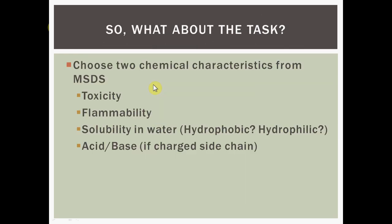With your task, what you need to do is choose two chemical characteristics from an MSDS for the essential amino acid that you choose. These can be things like toxicity, flammability, solubility in water. Is it hydrophobic? Is it hydrophilic? If it happens to have a charged side chain, is it acidic or is it basic? These are just some ideas for you, and hopefully that has been helpful.